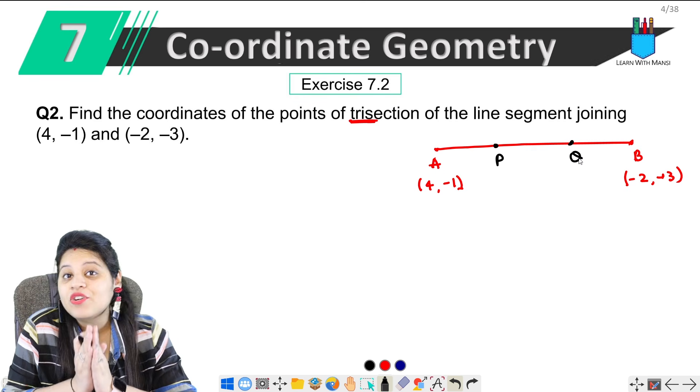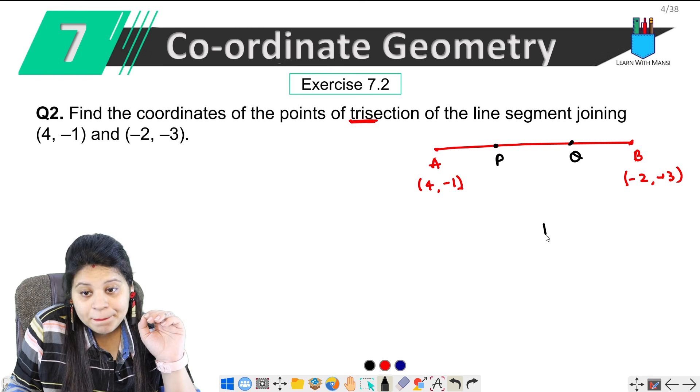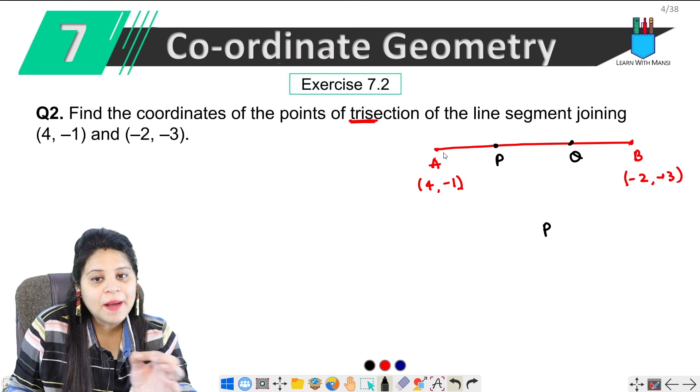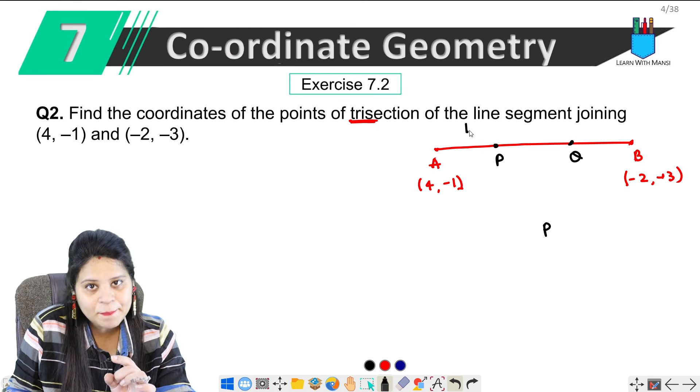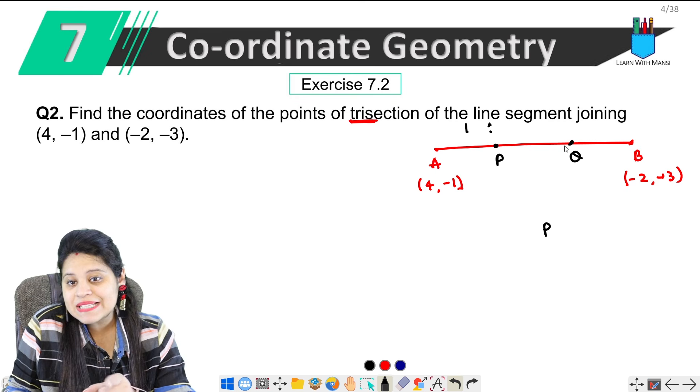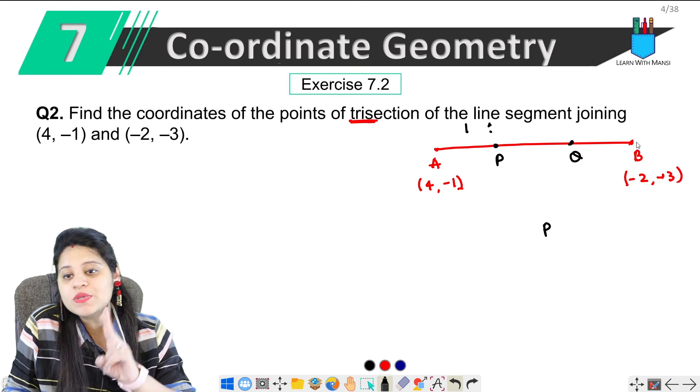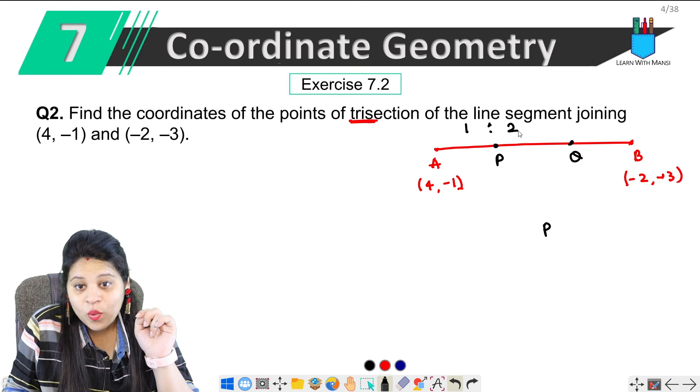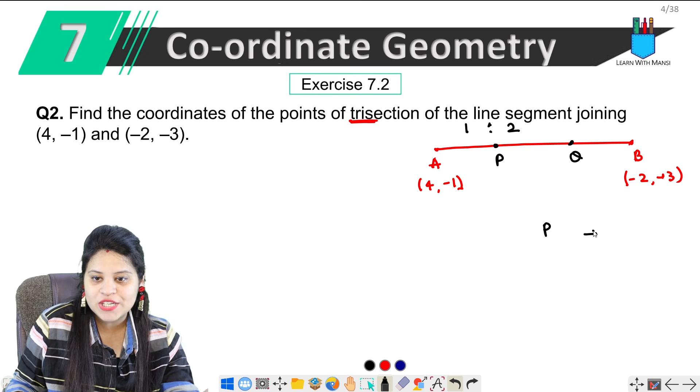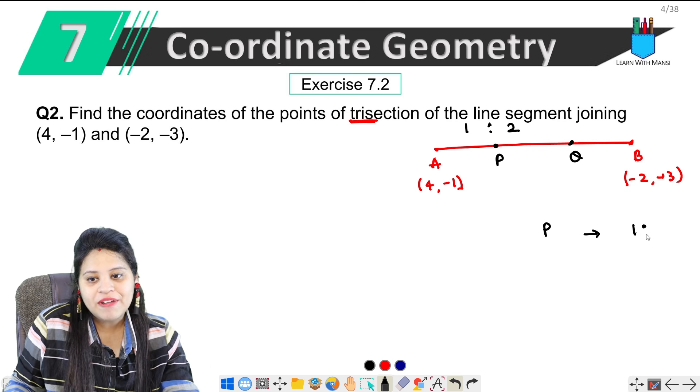Now the twist here is ke hamare paas ratio bhi nahi hai given. To nahi hai question mein. Lekin bola hai trisection. Matlab jab main P point ki baat karu, to dekho, yahan pe A se leke P tak ek part hua, and yahan se P se Q tak ek part aur Q se B tak ek part. Matlab 1 is to 2 ke ratio mein P point jo hai woh AB ko 1 is to 2 ke ratio mein divide karegi.